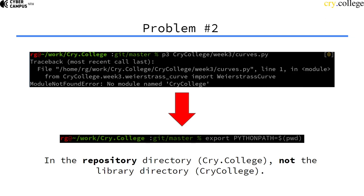The second problem you'll run into is that it will tell you there's no module called CryCollege. You can solve this by changing directories into the CryCollege repository directory — not into the library directory — and then exporting the Python path, which will tell the Python interpreter where to look for the CryCollege library. Once you have done that, everything should work just fine.